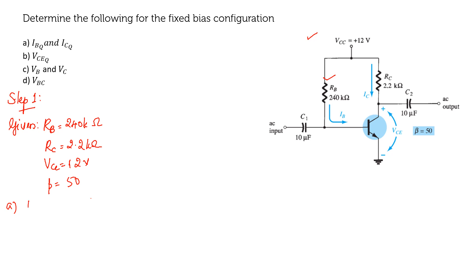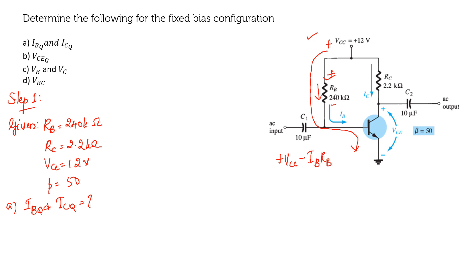First we have to find out IBQ and ICQ. In order to find the value for IBQ at the quiescent point, we write the input loop equation. Starting with VCC, then the potential is plus to minus, so we get minus IB·RB. The current flowing is IB, and then we subtract the junction voltage VBE, giving us: VCC − IB·RB − VBE = 0.